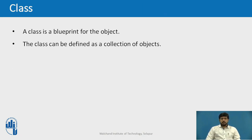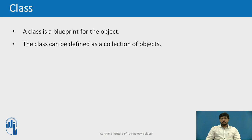The first principle is class. A class is a user-defined blueprint or prototype from which objects are created. It represents a set of properties or attributes and methods that are common to all objects of the same type. For example, a student class would contain attributes such as name, roll number, year, and marks, and methods such as calculating percentage and displaying student details. Together, these form a class.